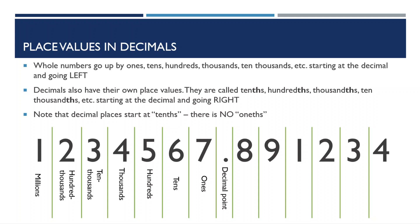Decimals also have their own place values. They're called tenths, hundredths, thousandths, ten thousandths, and so on, starting at the decimal and going right. Note that the decimal places start at tenths, and there is no once.